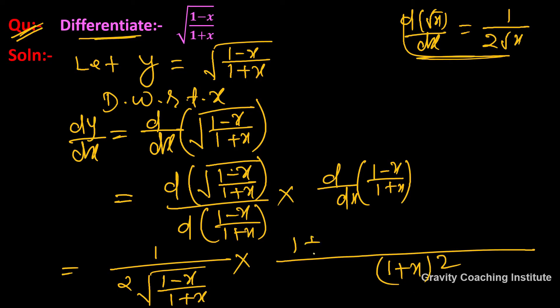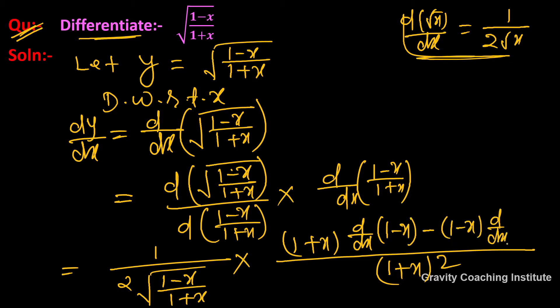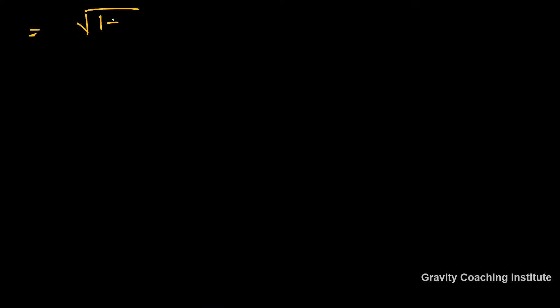For the quotient rule part, we get: [(1+x)·(differentiation of 1-x) minus (1-x)·(differentiation of 1+x)] all over (1+x)². The differentiation of 1-x is -1, and the differentiation of 1+x is 1.